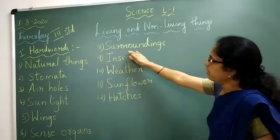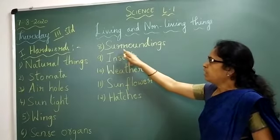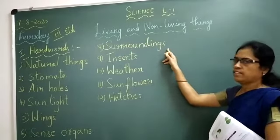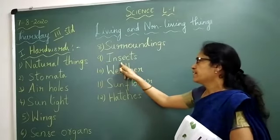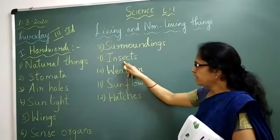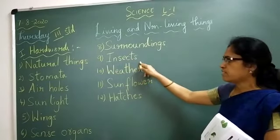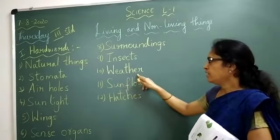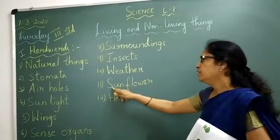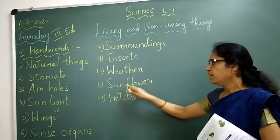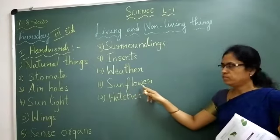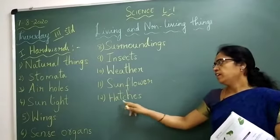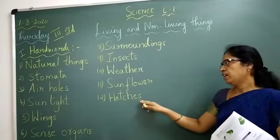Eighth one: surroundings. S-U-R-R-O-U-N-D-I-N-G-S, surroundings. Ninth one: insects. I-N-S-E-C-T-S, insects. Tenth one: weather. W-E-A-T-H-E-R, weather. Eleventh one: sunflower. S-U-N, F-L-O-W-E-R, sunflower. Twelfth one: hatches. H-A-T-C-H-E-S, hatches.